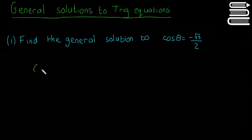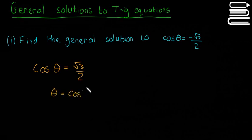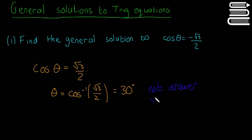The first thing you do is write out the problem: find the general solution to cos θ = -√3/2. That minus is important. But first, you say cos θ = √3/2 — forget about the minus just for a second — and then θ = inverse cos(√3/2), which gives you θ = 30 degrees. This is not your answer; this is what you call the reference angle.